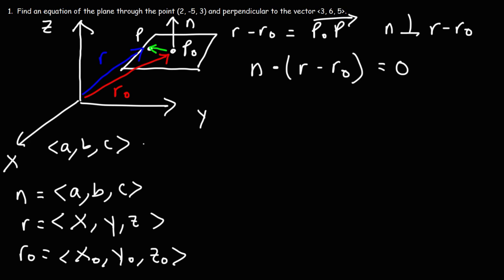So this is going to be X minus X0. And then comma Y minus Y0. And then comma Z minus Z0.